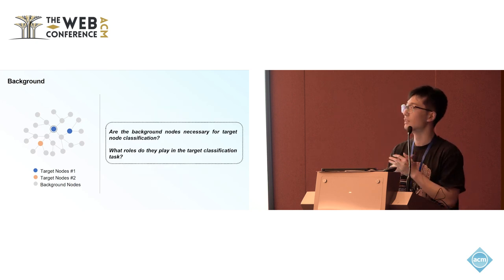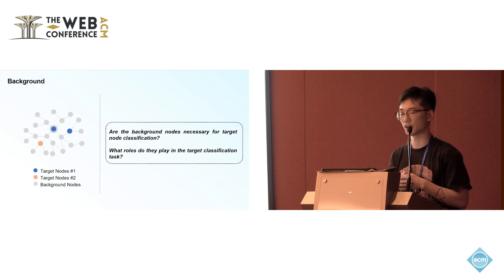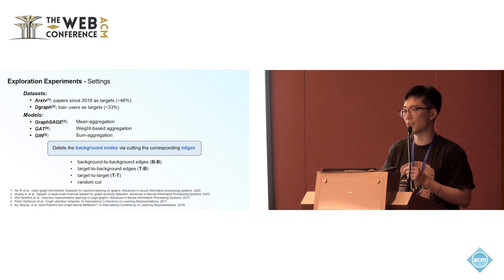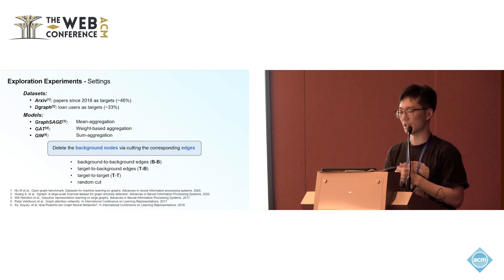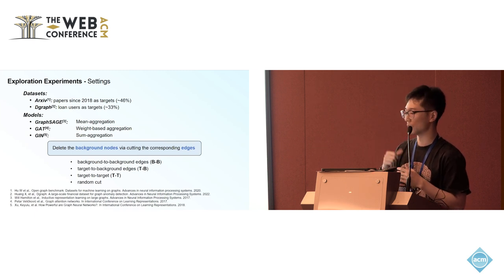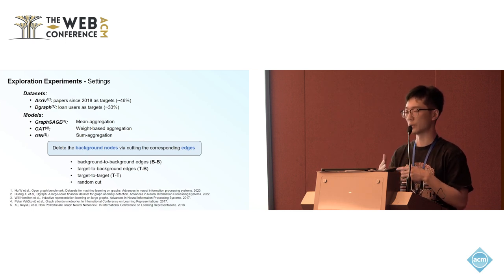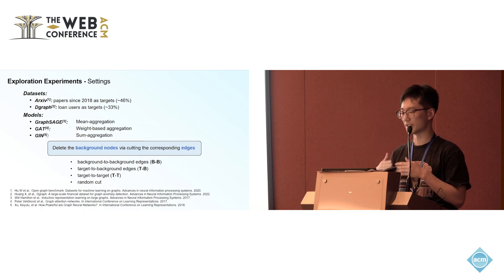Based on this, we raised two questions: first, are the background nodes necessary for target node classification? And second, what roles do they play in the target classification task? To answer these two questions, we conducted empirical analysis. We utilized several datasets and manually defined target nodes and background nodes based on the downstream tasks. For example, in the arXiv paper dataset, we defined papers since 2018 as target nodes and all other papers as background nodes.